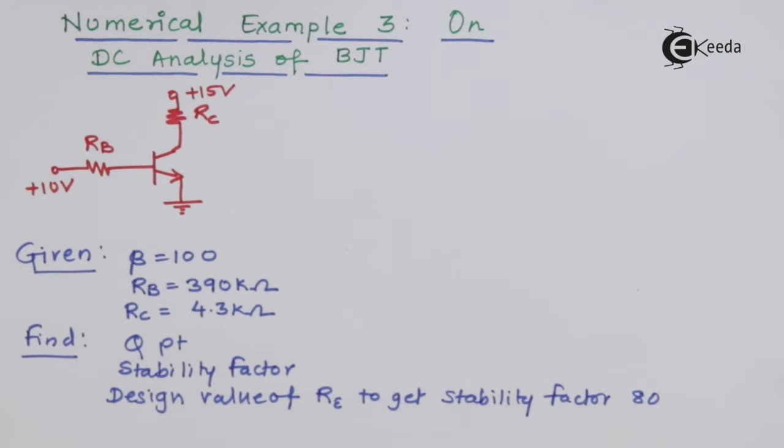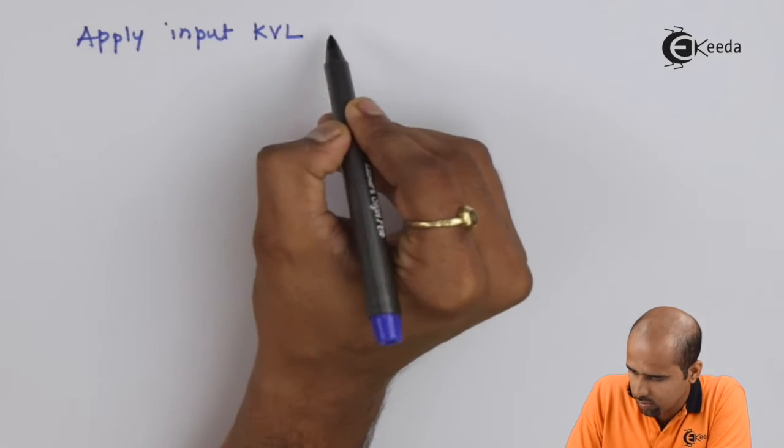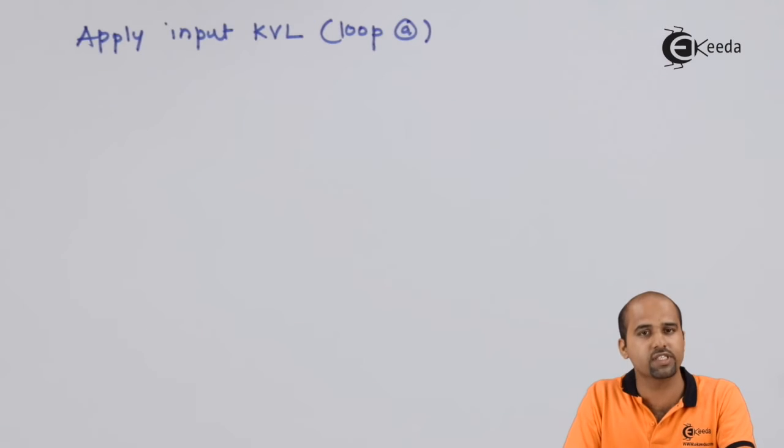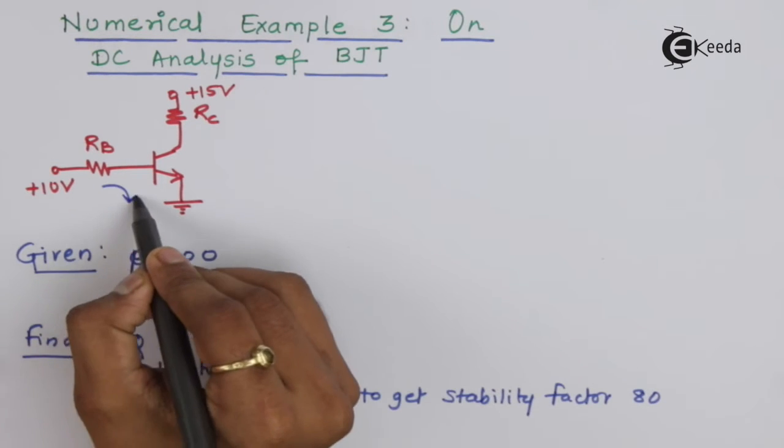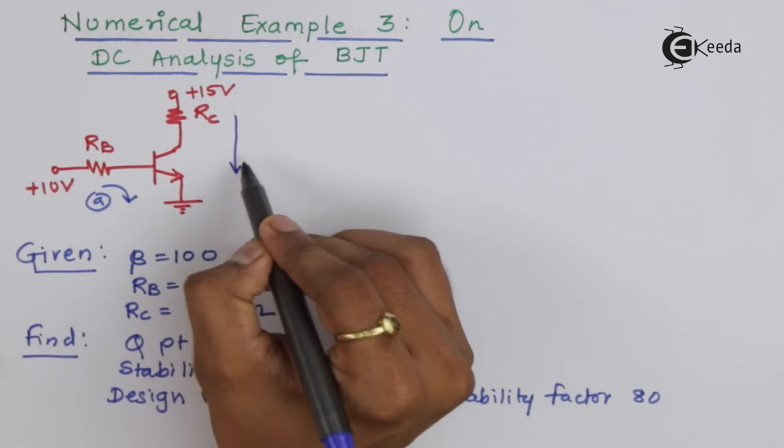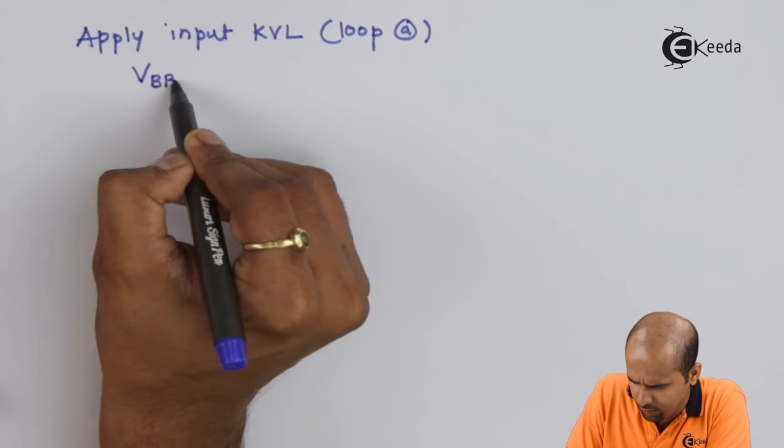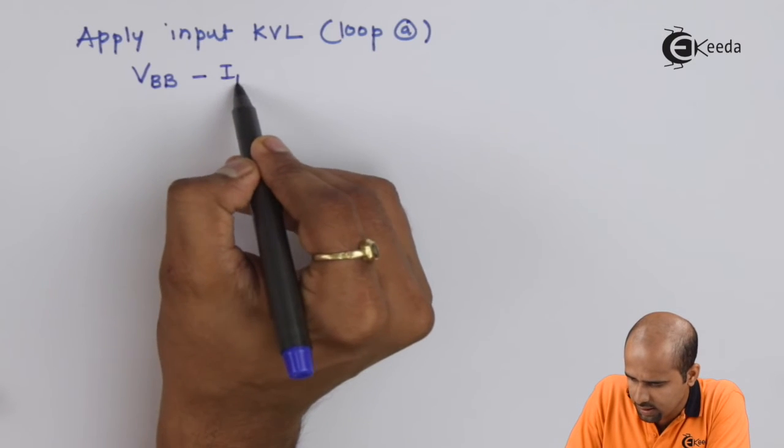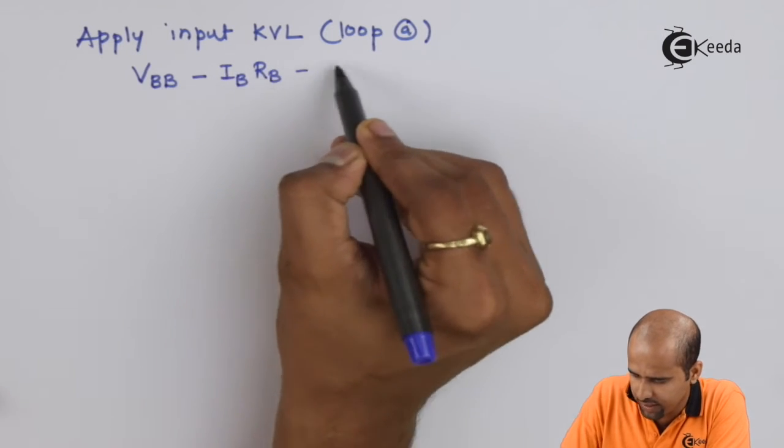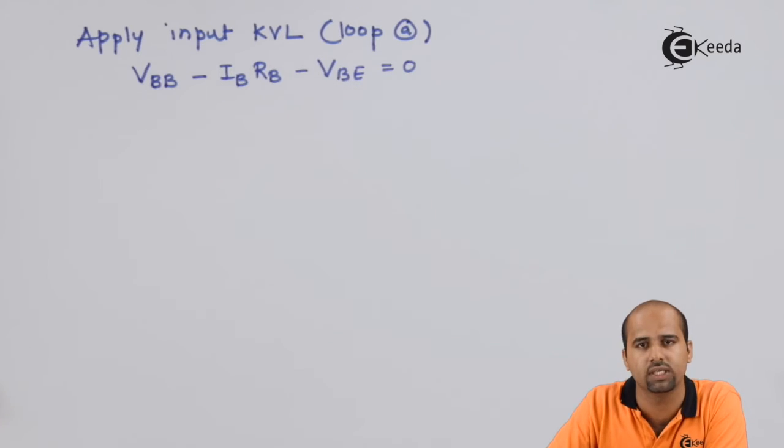We are tending towards a more stable circuit. In this circuit, no capacitors are applied, so we'll directly apply input KVL with the base potential of 10 volts. This is loop A and this is loop B.